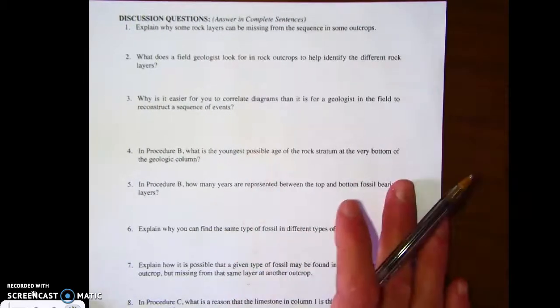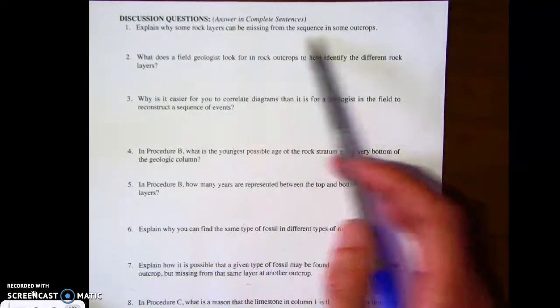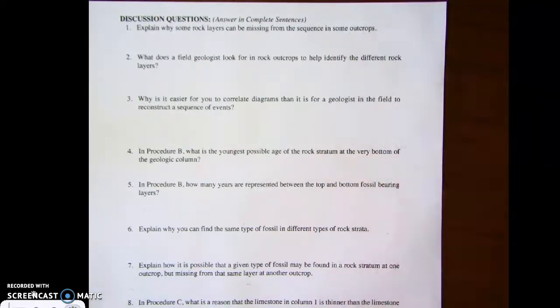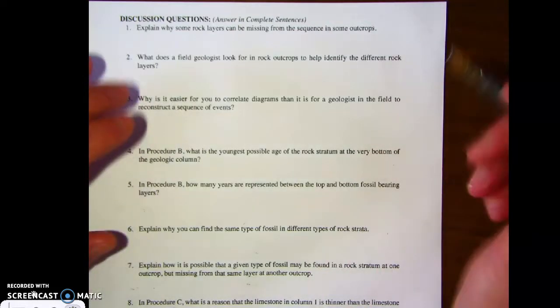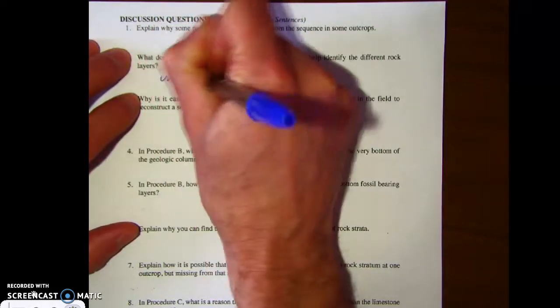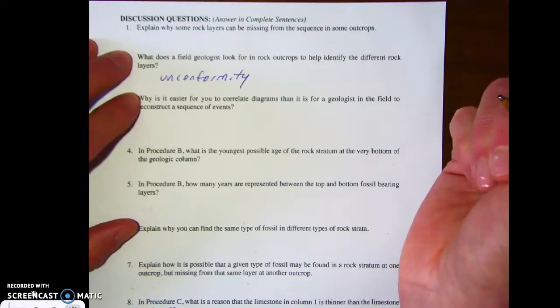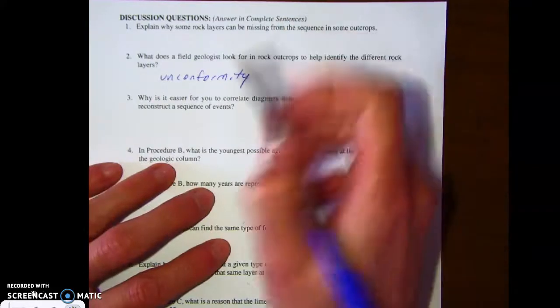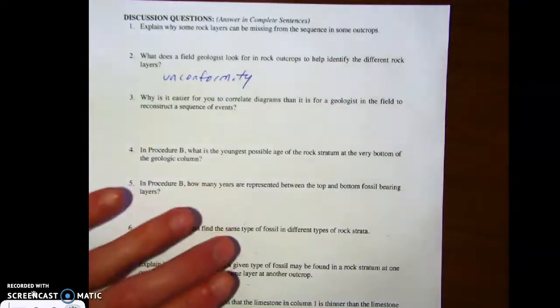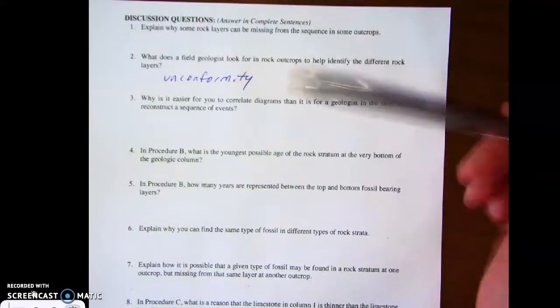So there'll be a separate document for you to write your answers in. It says explain why some rock layers can be missing from this sequence in some outcrops. Well, again, this has to do with the whole concept of an unconformity. That's not exactly the answer, I'm just writing down some thoughts. Some areas have experienced weathering and erosion, and those areas that haven't, those rocks were just never exposed at the surface. That's basically the definition of an unconformity.